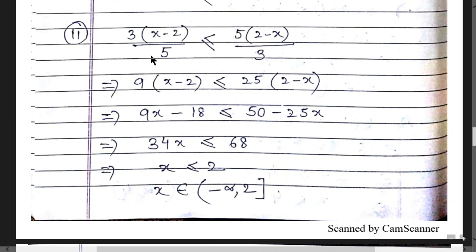Question 11: 3(x-2)/5 ≤ 5(2-x)/3. Cross-multiplying gives 9(x-2) ≤ 25(2-x), which expands to 9x - 18 ≤ 50 - 25x. Combining gives 34x ≤ 68, so x ≤ 2. The interval is (-∞, 2], with a square (closed) bracket because of the equality sign.